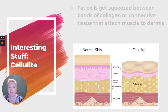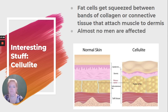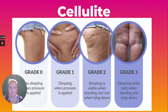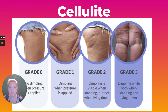Cellulite is when fat cells get squeezed between bands of collagen or connective tissue that attach muscle to the dermis and hypodermis underneath. Almost no men are affected, but about 90% of women are. Cellulite has varying grades: from zero — no dimpling — to dimpling only when squeezing the skin, to dimpling when standing but not lying down, to dimpling no matter what.